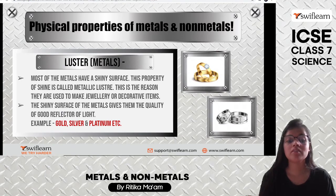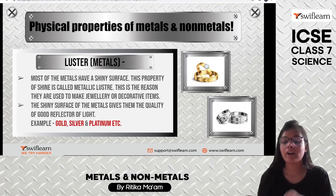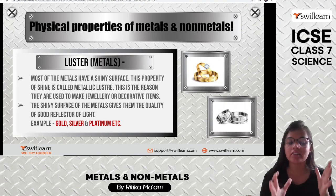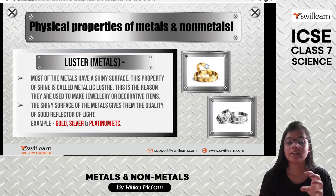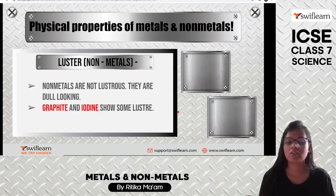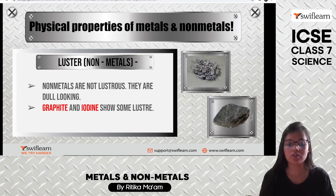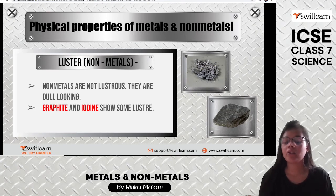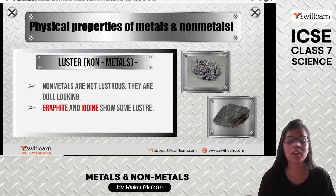Luster means shine. Metals have a shiny surface — known as metallic luster — which is why they are used in making jewelry and are good reflectors of light. Metals used in making jewelry include gold, silver, and platinum. Nonmetals are generally non-lustrous, but graphite and iodine are exceptions which are lustrous.